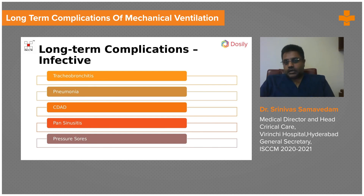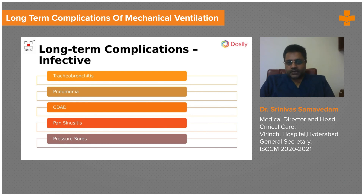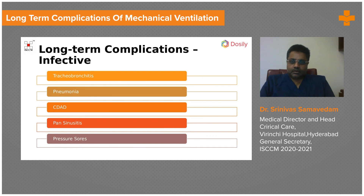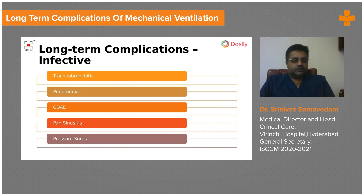Placing a nasogastric tube is an important risk factor for sinusitis. If this problem is not identified and the nasogastric tube remains in place for a longer time, the patient could develop pan-sinusitis, presenting as pyrexia of unknown origin or new-onset fever in the ICU. Additionally, because these patients cannot be repositioned every two hours like stable patients, and due to malnutrition, they are at high risk of pressure sores — something we must monitor during long-term mechanical ventilation.